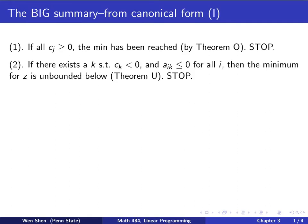Step 2: then we check if there exists a k such that ck is less than 0. In that column, if you look at the coefficients a's, if they are all less than or equal to 0 for all the i's, then the minimum value of z is unbounded below, is negative infinity. This follows from theorem U unbounded, and then you stop the algorithm.